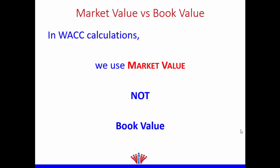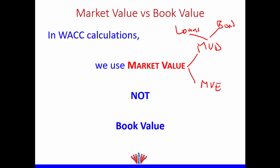Every time we calculate weighted average cost of capital, or WACC, we use market value not book value. So we use market value of debt and market value of equity. Our debt could be loans or bonds, so we get the market value of the loan and the market value of the bonds. Our equity could be preference shares or common shares.